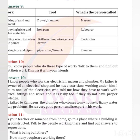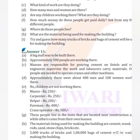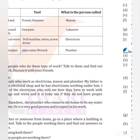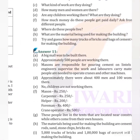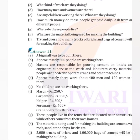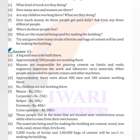Answers to the construction site visit: A big mall was being built there. Approximately 500 people are working there. Machines are responsible for pouring cement on lintels and roofs; engineers supervise the work and laborers carry materials; other people operate cranes and other machines. There were approximately 400 men and 100 women working there.